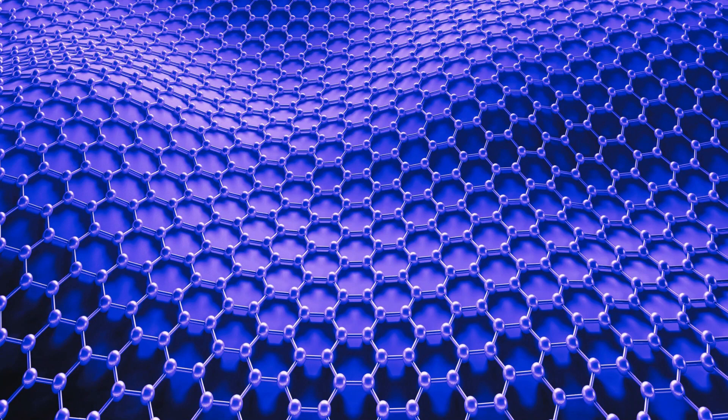Another allotrope of carbon is graphene. It's a form of carbon consisting of planar sheets which are one atom thick only. And in these sheets, the atoms are arranged in a honeycomb shaped lattice. That's an amazing thing to be known as an allotrope of carbon as compared to graphite or diamond.